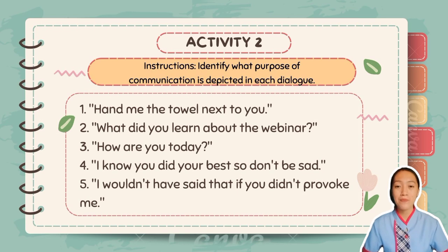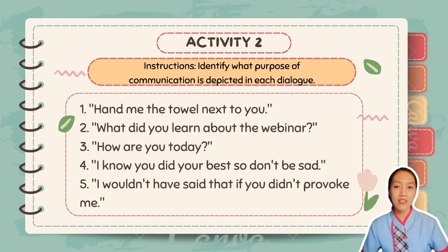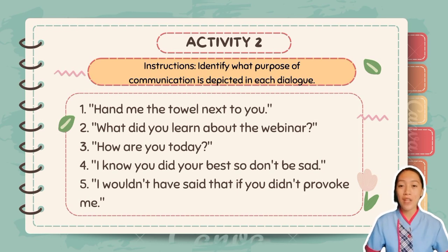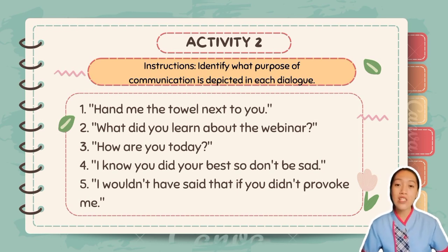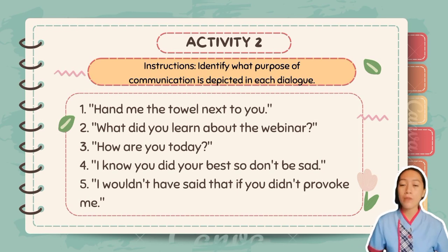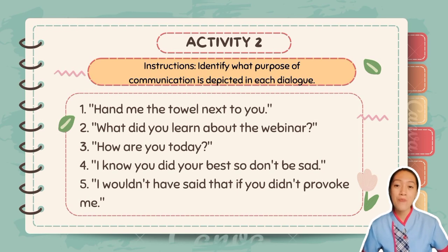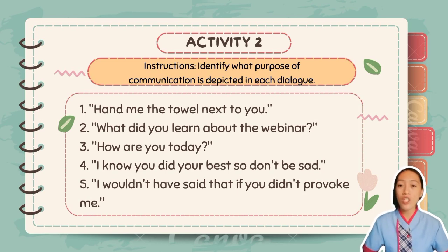And lastly, number five: 'I wouldn't have said that if you didn't provoke me.' Here the speaker is trying to blame someone. Overall, this showed that each person has their own purposes when they communicate — it can be simply to socialize, to influence, to command, or to inform.